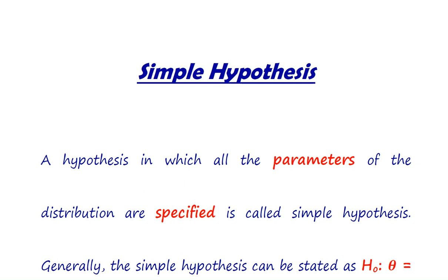What is a simple hypothesis? A hypothesis in which all parameters of the distribution are specified is called a simple hypothesis. Specification means the parameter is equal to an exact single value.